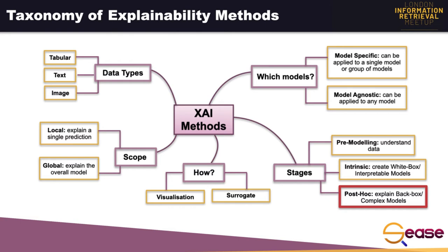Another aspect is: does it explain a particular sample or the entire model? There is a difference between local and global explainability. Local explainability looks at a single prediction and identifies features leading to that prediction. Global explainability looks at the model parameters and tries to figure out how the model works globally — how to explain the whole model behavior. There are also visualization methods and surrogate models, which are interpretable models trained to approximate the prediction of a black box.